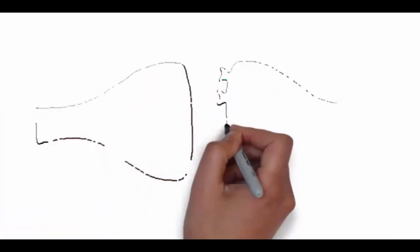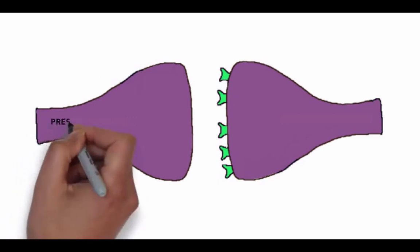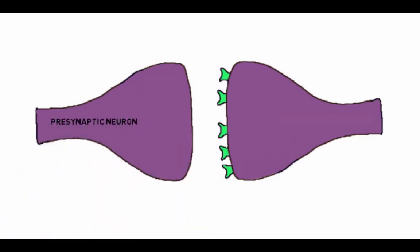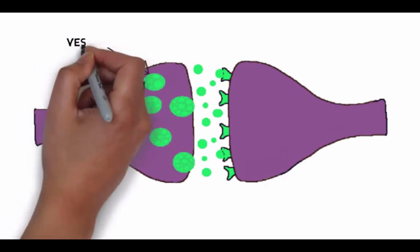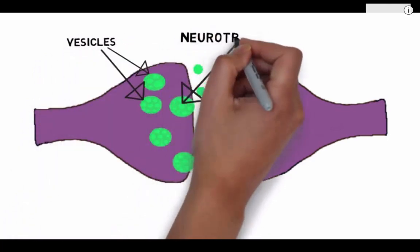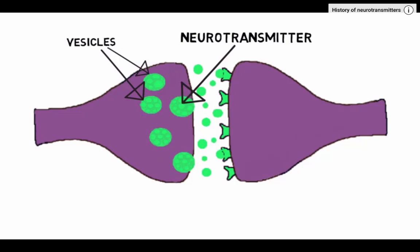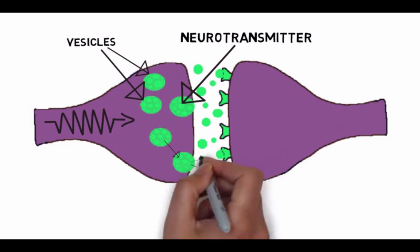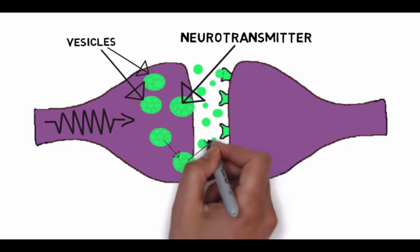The neuron where the signal is initiated is called the presynaptic neuron, while the neuron that receives the signal is called the postsynaptic neuron. In the presynaptic neuron, there are chemical signals called neurotransmitters that are packaged into small sacs called vesicles. Each vesicle can contain thousands of neurotransmitter molecules. When the presynaptic neuron is excited by an electrical signal called an action potential, this causes the vesicles to fuse with the presynaptic membrane and release their contents into the synaptic cleft.